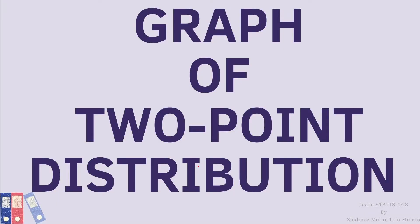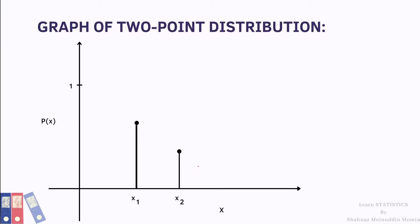Now let us see the graph of two-point distribution — how the graph looks like. We take the values of X on the X-axis and the probabilities along the Y-axis. At point X1 the probability is P, and at point X2 the probability is Q.